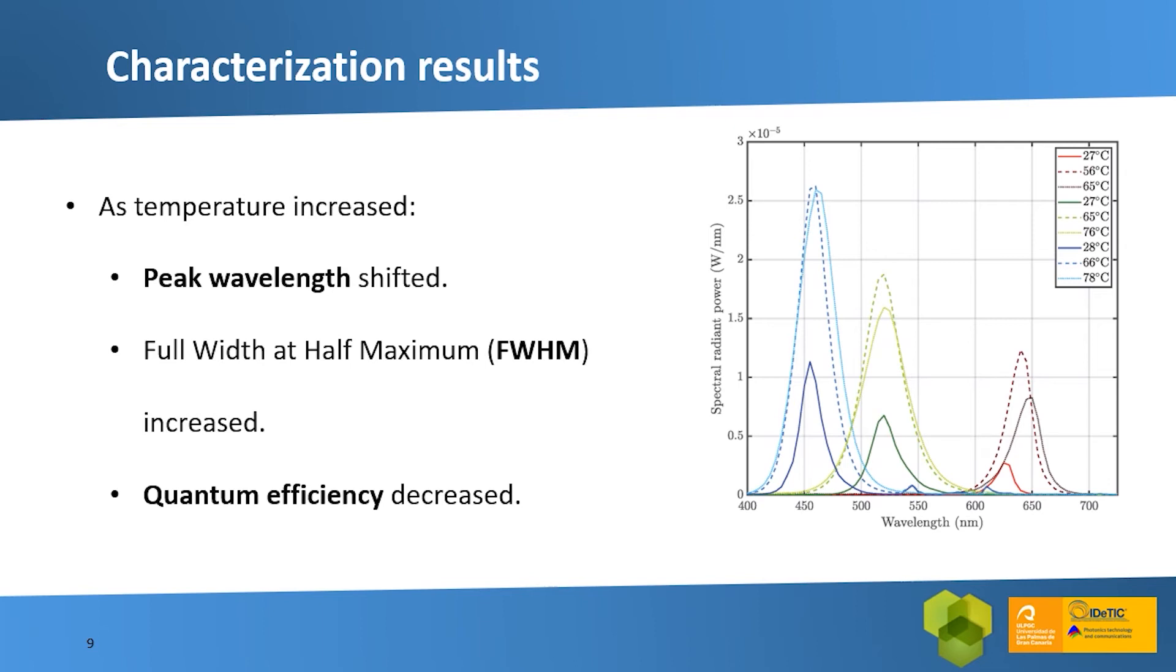Additionally, we used a spectrometer and light meter to obtain the wavelength information of the LEDs. In this graph, we see the spectral radiant power and also the effect of light-induced temperature on LED emission. From this, we can see three effects as temperature increased. Firstly, the peak wavelength shifted. Then, the FWHM increased and finally, the efficiency diminished.